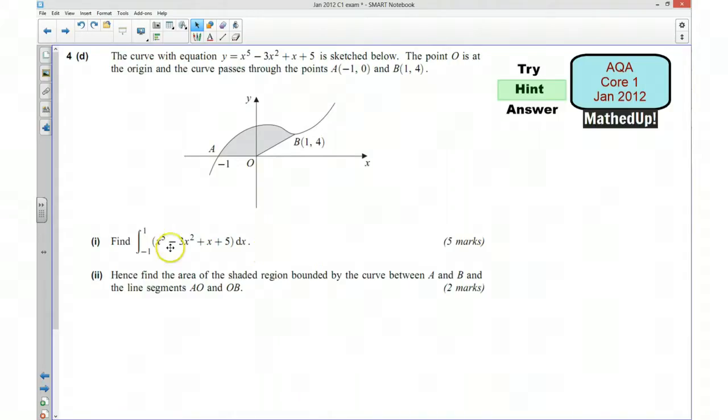What you need to remember is when we're integrating a polynomial, we add one to the power and then we divide by that new power. Because this is the definite integral, once I've done that, into my new function I need to put in 1 and then I put in -1, and then I do the first result subtract the second result.